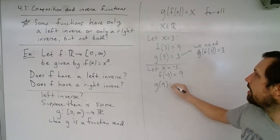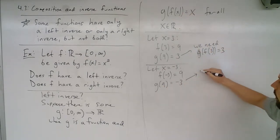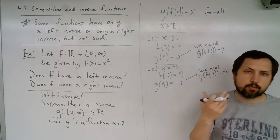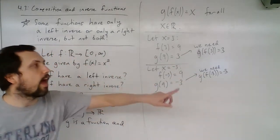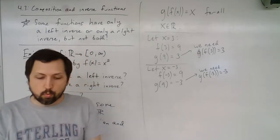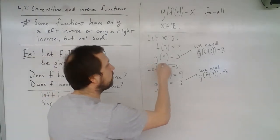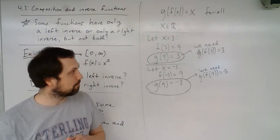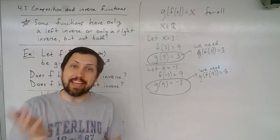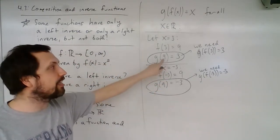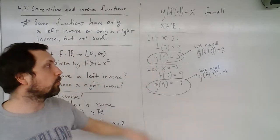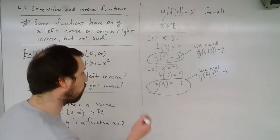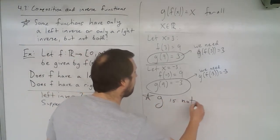So we get that g of 9 must equal negative 3 as well, because we need g of f of negative 3 to equal negative 3. But notice: we have g of 9 equals 3 and g of 9 equals negative 3. That is not a function — a function requires every input to have exactly one output. We need nine to map to both 3 and negative 3, so g is not a function.